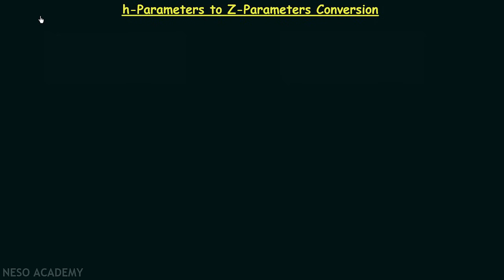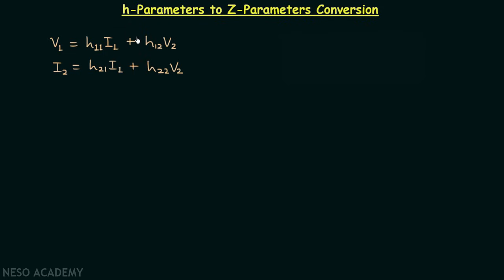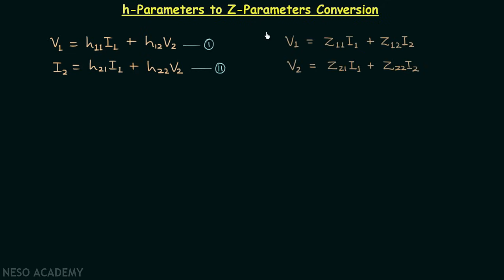We have a clear understanding of H parameters and Z parameters, and now we are going to perform the conversion of H parameters to Z parameters. To start with, I have taken the set of equations we have in case of H parameters — equation number one and equation number two — and also the set of equations we have in case of Z parameters — equation number three and equation number four.